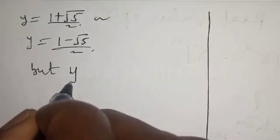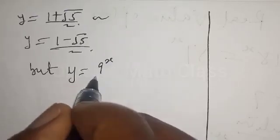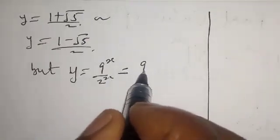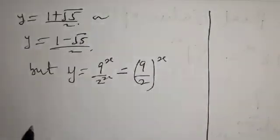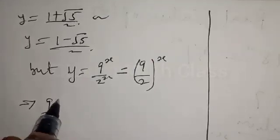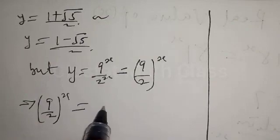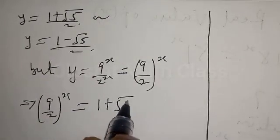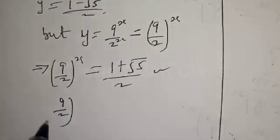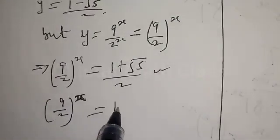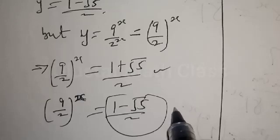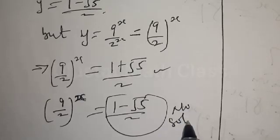But we said y equals 9 raised to the power x over 2 raised to the power x, which equals (9 over 2) raised to the power x. So (9 over 2) raised to the power x equals 1 plus root 5 over 2, or (9 over 2) raised to the power x equals 1 minus root 5 over 2. The second case has no solution since the left side is always positive.